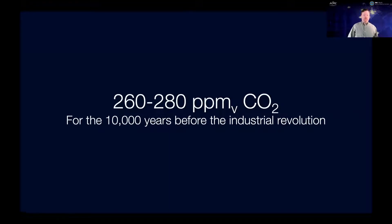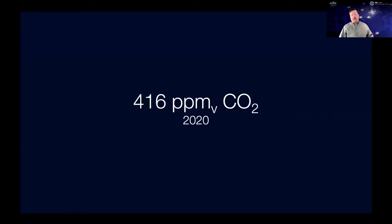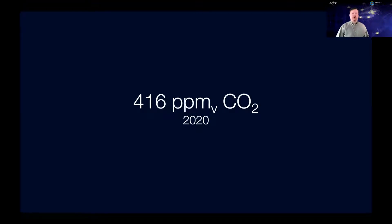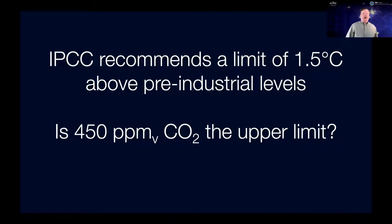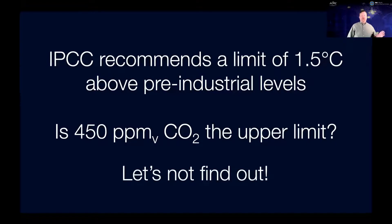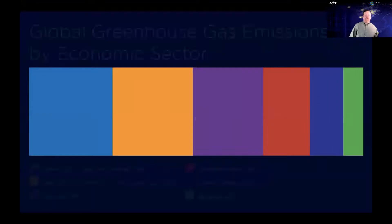For the 10,000 years before the industrial revolution, the amount of CO2 in the earth's atmosphere was about 260 to 280 parts per million per unit volume. Fast forward through the industrial revolution into modern times, and in 2020 we're at about 416 parts per million per unit volume of CO2. That's a really large increase. How high can that go before we start to feel the effects of large-scale climate change? The IPCC recommends a limit of 1.5 degrees Celsius above pre-industrial temperature levels, which some say corresponds to 450 parts per million. Let's not find out. Let's do everything we can to decarbonize now and stay clear of that upper limit.